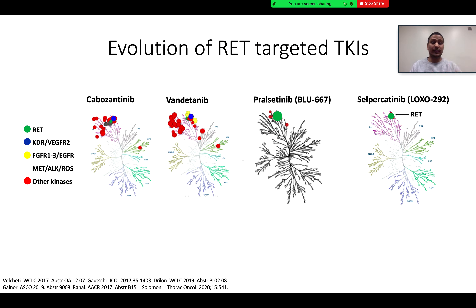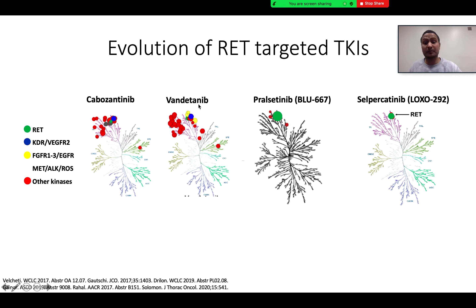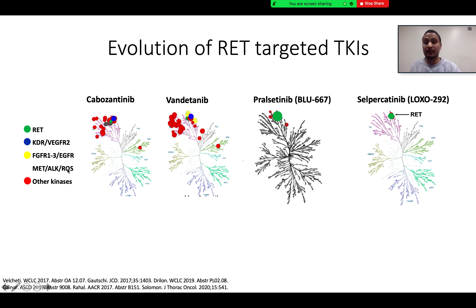Focusing now on RET-targeted tyrosine kinase inhibitors: cabozantinib and vandetanib have been used in the past and are still used for RET-altered cancer treatment. However, both drugs are not RET-specific — they are multi-kinase inhibitors targeting not only RET but also other kinases such as VEGFR2, FGFR, Met, ALK, and many others. As a result, multiple toxicities have been found in patients and they do not tolerate these drugs well.